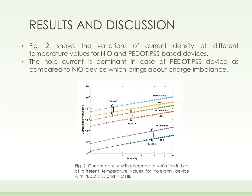Figure 2 shows variations of current with respect to bias for NiO and PEDOT:PSS devices. The comparison shows that the PEDOT:PSS device has higher current density than the NiO device, and thus the hole current needs to be controlled to bring charge balance within the device.